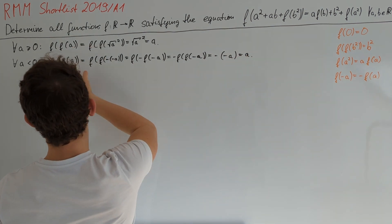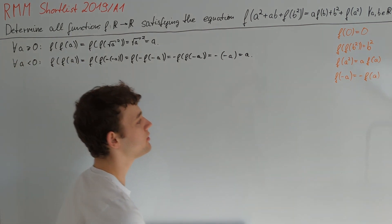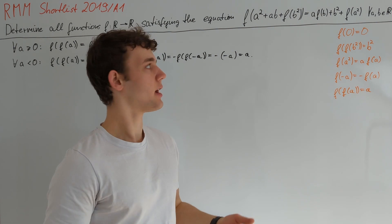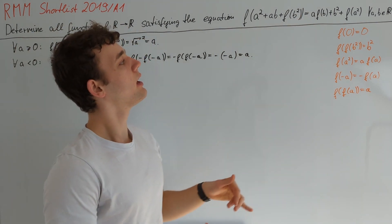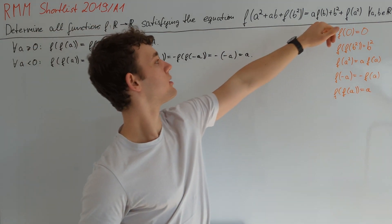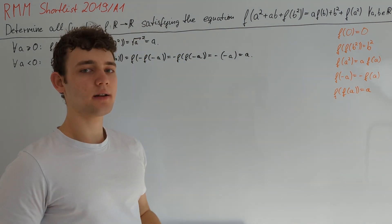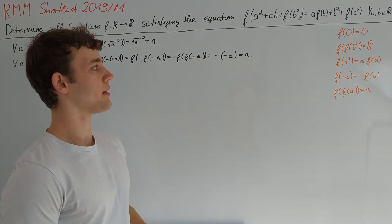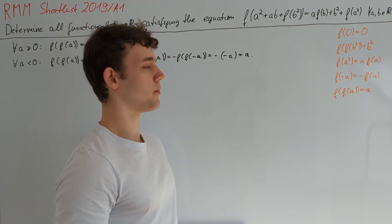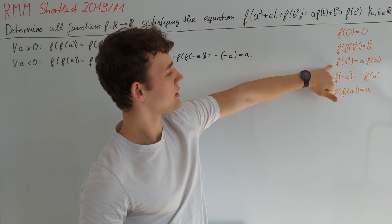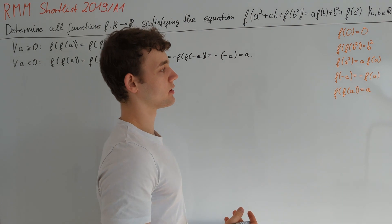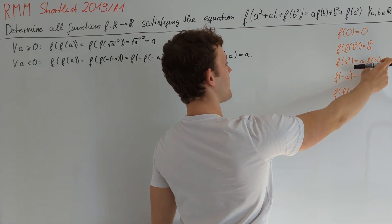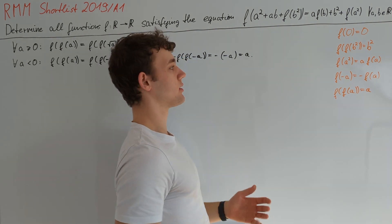So we get the same identity regardless of the sign of a, and we conclude f(f(a)) = a for all a. This means whenever we have f(x) in an equation, we can substitute x with f(x) since f(f(x)) = x. Applied to our equation f(a²) = a·f(a), substituting f(a) for a gives f(f(a)) · f(f(a)) = f(a) · a, and the right side remains unchanged.